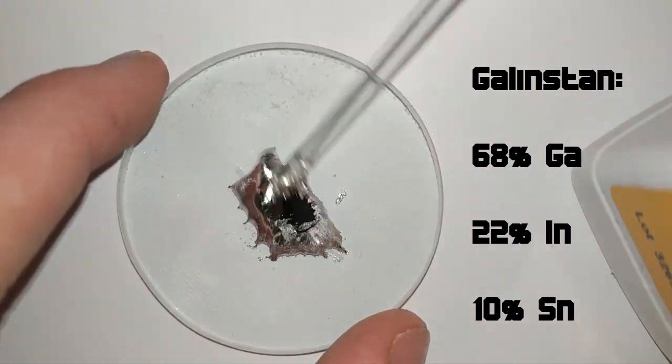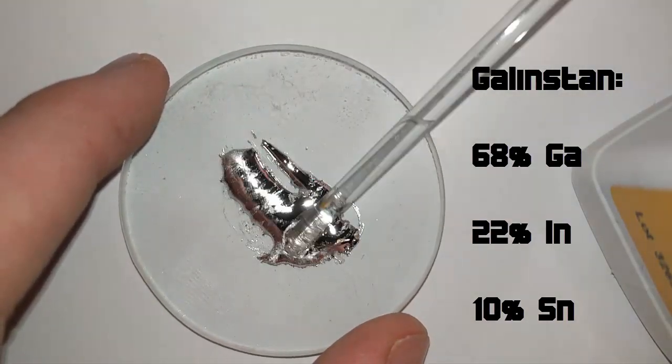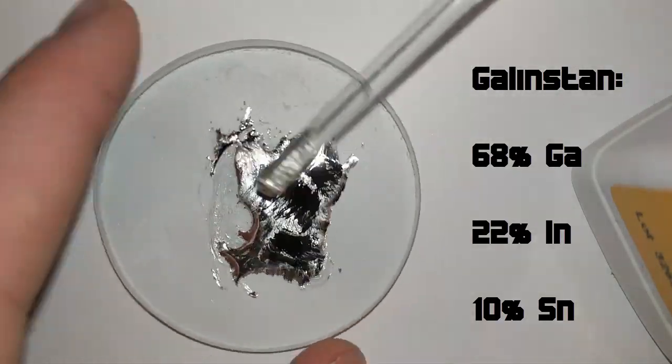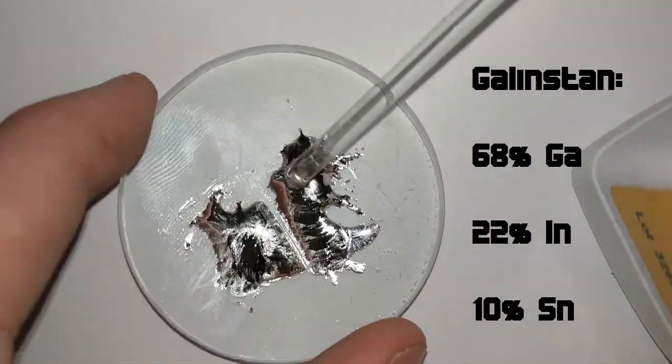Interestingly enough, this alloy stays liquid at room temperature and was therefore used in mercury-free thermometers. A major downside though is that it's kind of sticking to smooth surfaces like glass.